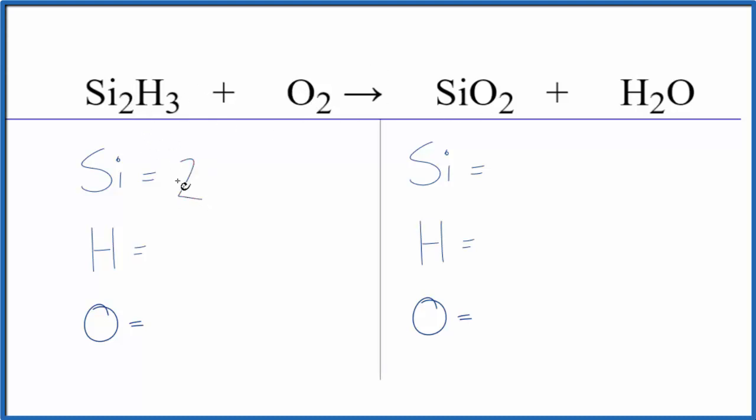We have 2 silicon on the reactant side. This SiO2 on the product side, we have 1, and then hydrogen 2, and oxygen, be careful, we have 2, plus we have this 1 over here, that gives us 3 oxygen atoms.